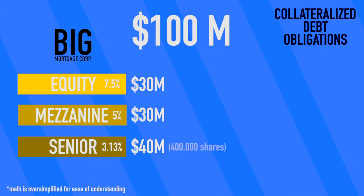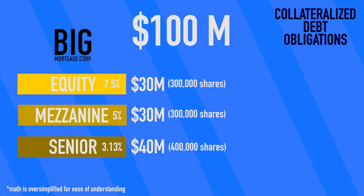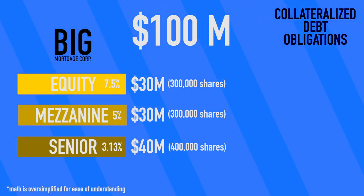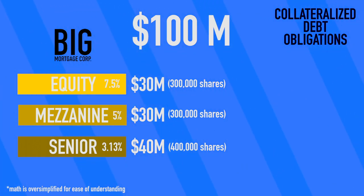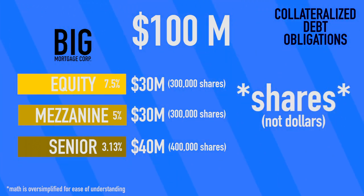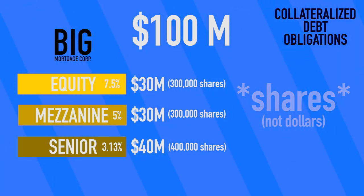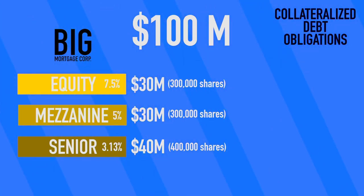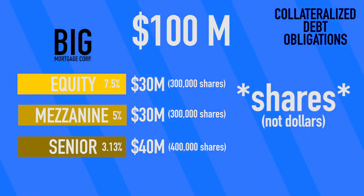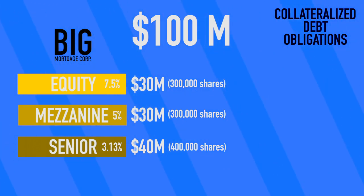For example, if we sold 400,000 shares of the senior for $100 each — that's $40 million — each paying out a 3.13% interest rate each year, or $3.13 per share each year. We sold 300,000 of the mezzanine tranche for $100 each, each paying out 5% interest each year, or $5. And finally, we sold 300,000 of the equity tranche for $100 each, returning 7.5% each year, or $7.50.